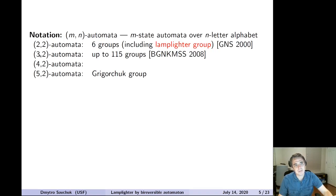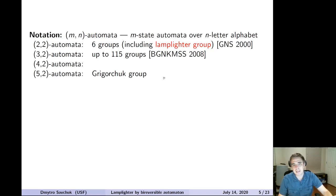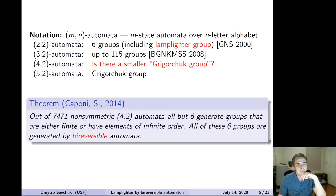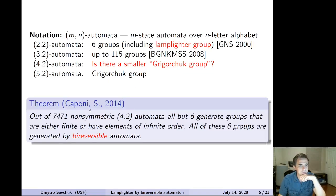The number of non-symmetric (3,2) automata is 194, and in a big project completed around 2008 involving 7 authors, we proved there are at most 115 pairwise non-isomorphic groups — most likely fewer, but that's what we were able to show. When you go to the class of (5,2) automata, you immediately get the wonderful example of Grigorchuk. A quite interesting question is whether there is a smaller Grigorchuk-type group generated by a 4-state automaton over a 2-letter alphabet. Back in 2014 with my master's student Luis Caponi, we started investigating that question.